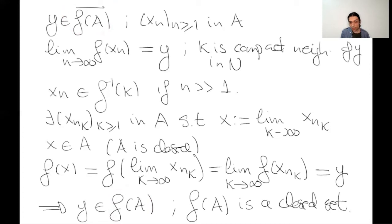So what we get is that the image of A is a closed set — that is what we wanted to prove. As a consequence, the map F between M and its image is a homeomorphism.